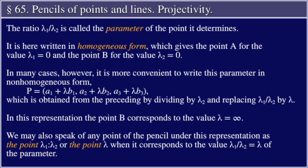The ratio λ₁/λ₂ is called the parameter of the point; it determines it. It is here written in homogeneous form, which gives the point A for the value λ₁ = 0 and the point B for the value λ₂ = 0. In many cases it is more convenient to write this parameter in non-homogeneous form: P = (a₁ + λb₁, a₂ + λb₂, a₃ + λb₃), obtained from the preceding by dividing by λ₂ and replacing λ₁/λ₂ by λ. In this representation the point B corresponds to the value λ = ∞. We may speak of any point of the pencil as the point λ₁:λ₂, or the point λ when it corresponds to the value λ₁/λ₂ = λ of the parameter.